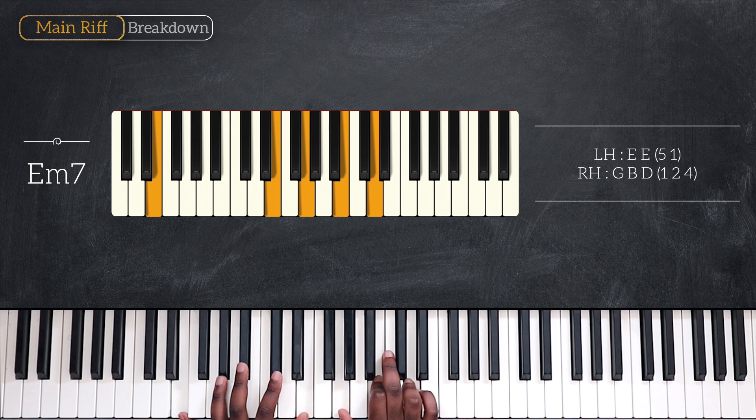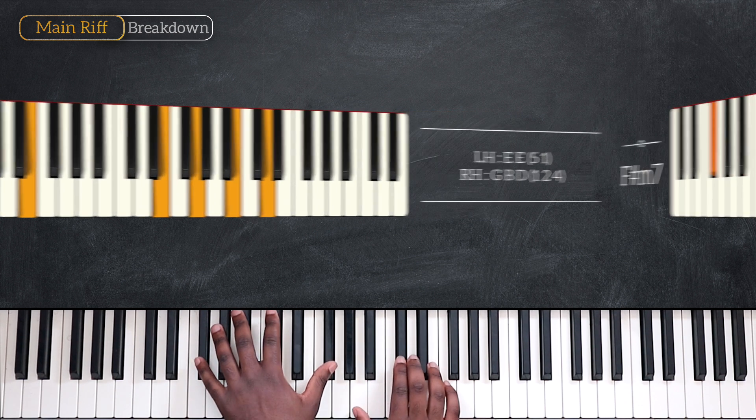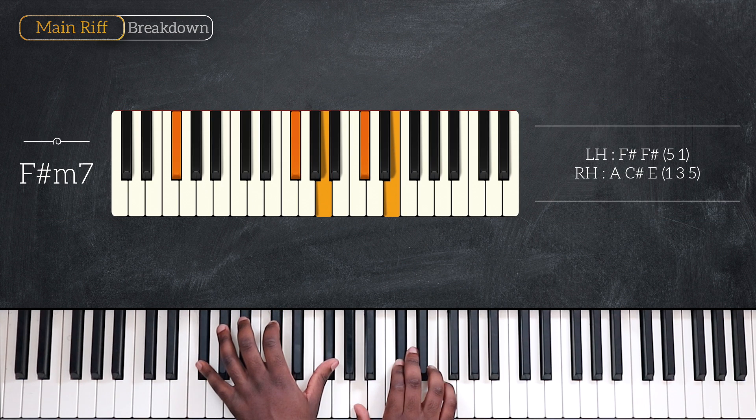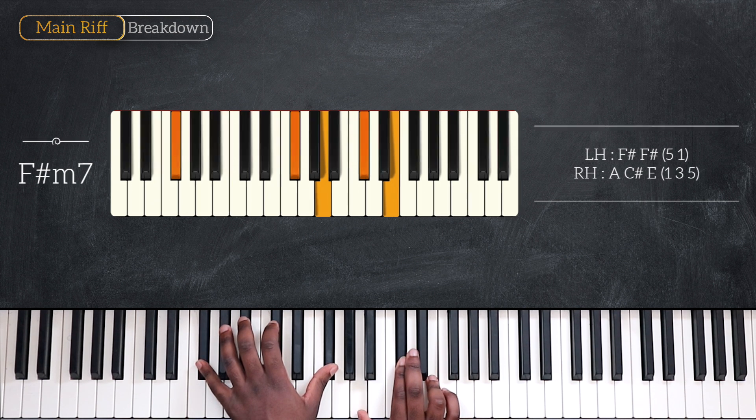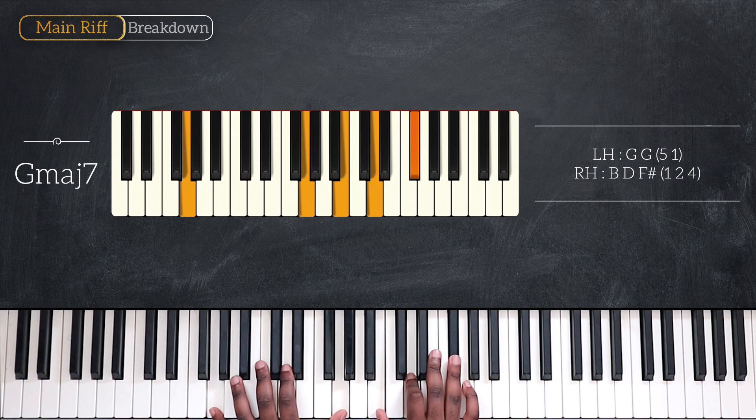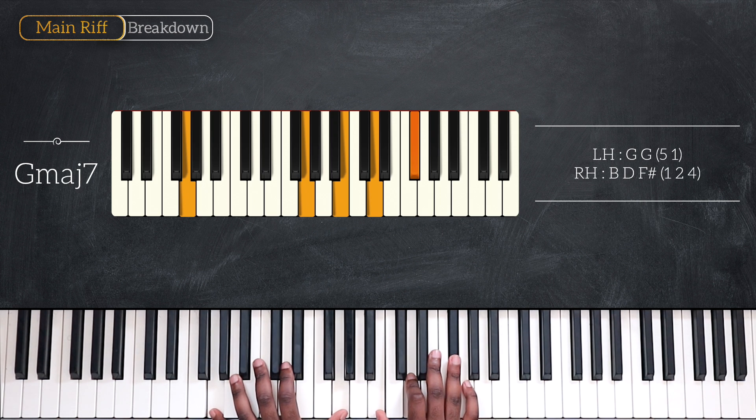Then I'm going to go up a whole step to play F sharp minor 7: octave F sharp, A, C sharp, and E. Then G major 7: octave G, B, D, and F sharp.